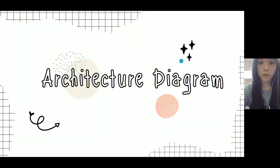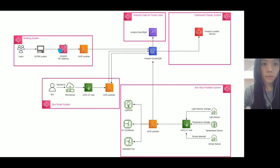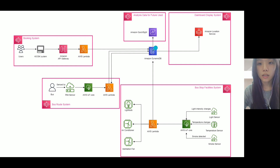Now let me introduce our architecture diagram. First, when the user wants to book a ticket, they interact with the QR system and the data is passed into Amazon DynamoDB and stored there. Then the bus company can use the QuickSight service to visualize the data and statistics to make predictions.